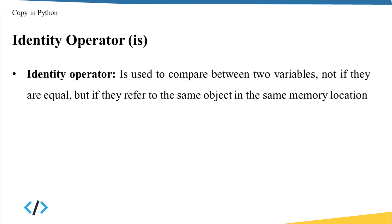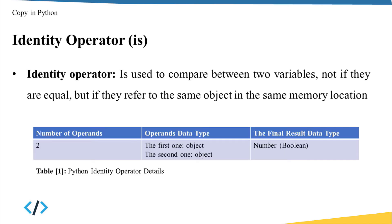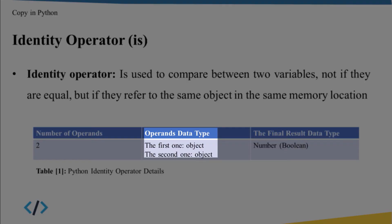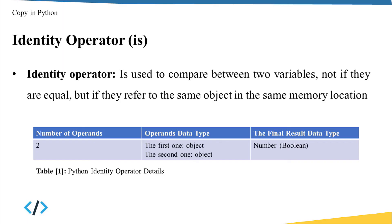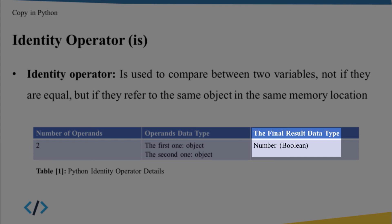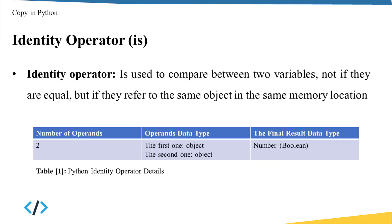The identity operator is usually used to compare between two variables — not whether they are equal, but whether they refer to the same objects in the same memory location. So it's used to discriminate between shallow copy and deep copy. This operator takes two operands, and the operands can be any mutable Python object. The final result is a Boolean: true if one variable is a shallow copy of the other, and false if one variable is a deep copy of the other.